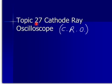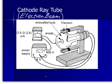Topic 27: cathode ray oscilloscope, or CRO in short. A cathode ray is simply an electron beam. This is a cathode ray tube — an electron beam can be produced from one end and travels across to the other end.